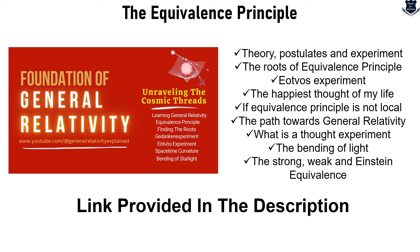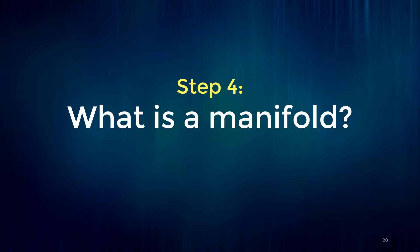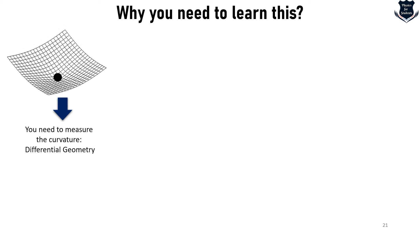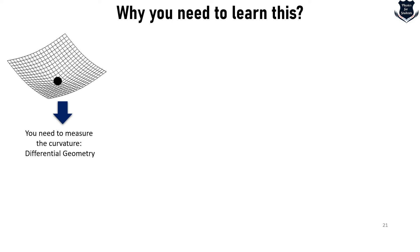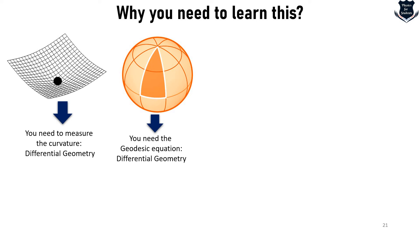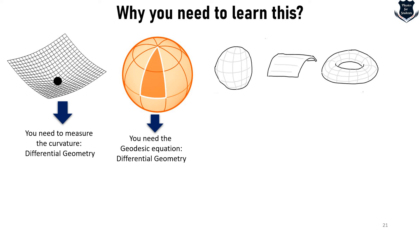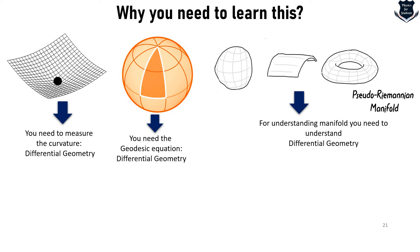Classical physics done, special relativity done, the equivalence principle done. Before going into general relativity, we need to take a step back. All those curvatures, lines, grids, and bending of starlight are happening on a surface, and we need to understand this surface — which is not an ordinary Euclidean surface. Step number four is: what is a manifold? To measure the curvature of any surface we need differential geometry. To measure lines on a sphere we cannot have a straight line, so we use a geodesic.